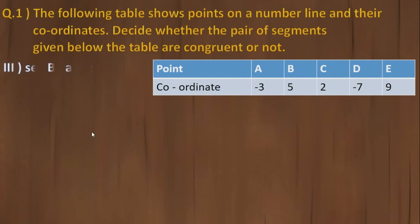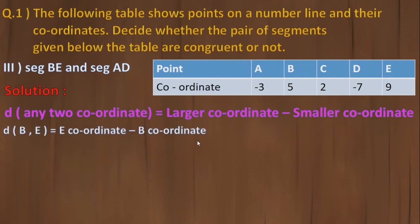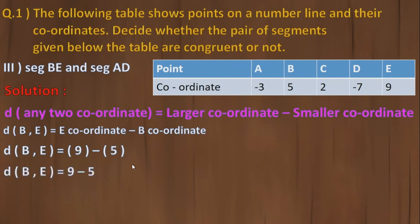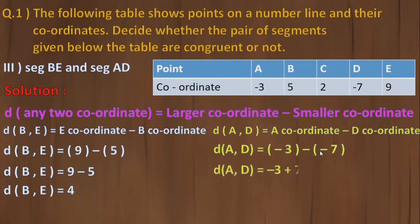Third part of question 1: check segment BE and segment AD. For BE, B's coordinate is 5 and E's coordinate is 9 — 9 is larger, so E coordinate minus B coordinate: 9 minus 5 equals 4. For AD, A's coordinate is minus 3 and D's coordinate is minus 7 — minus 3 is larger, so A coordinate minus D coordinate: minus 3 minus (minus 7) — double minus becomes plus — 7 minus 3 equals 4. Both values are 4, same result.